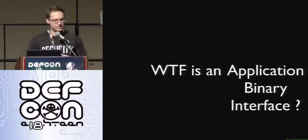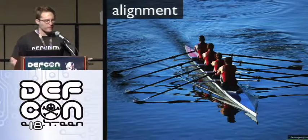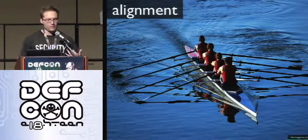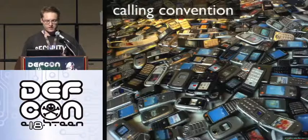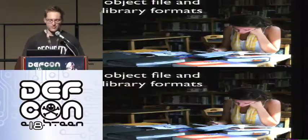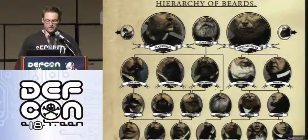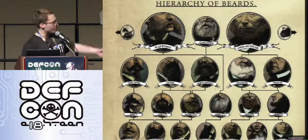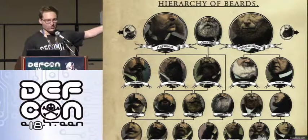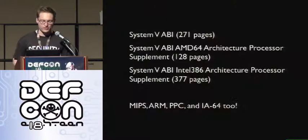What does an ABI actually tell us? It tells us a few things. Some of the more important things for this talk are: it tells us about alignment — the alignment of the program stack, data types, stuff like that — about calling convention, how functions are called, where arguments live, how all that stuff works, and about object file and library formats. The great thing about the ABI is that they form a hierarchy, kind of like a hierarchy of beards. They're all parts of each other and the ABIs are the exact same way.